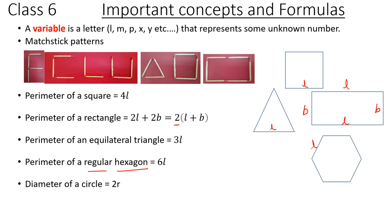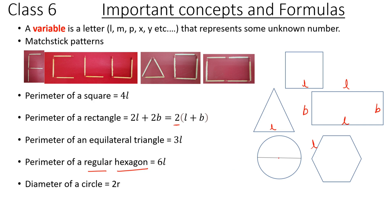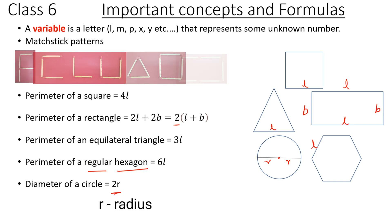Diameter of a circle. This is a circle and the diameter is the line passing through the center. So the diameter is 2 times the radius. This side is R and this side is also R, so the diameter is 2R.